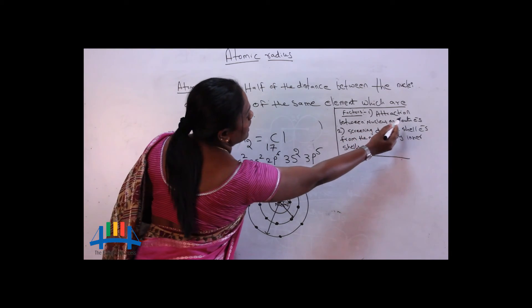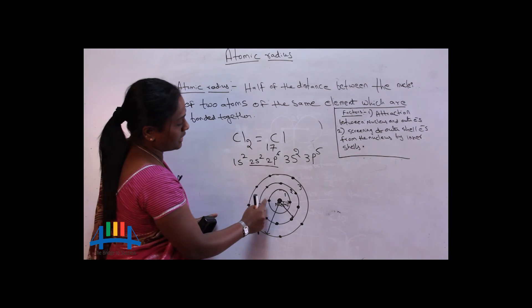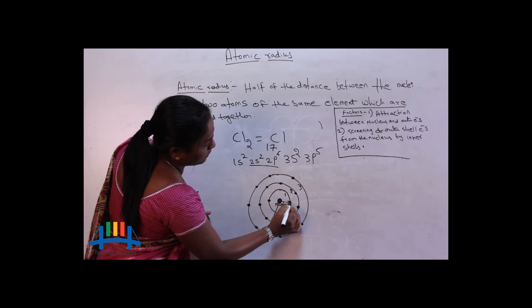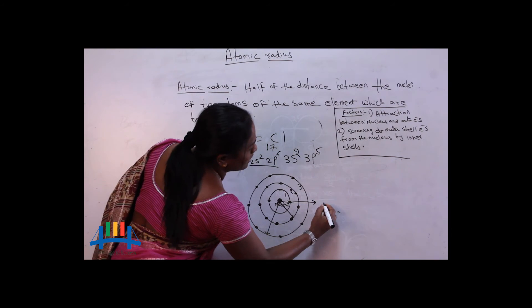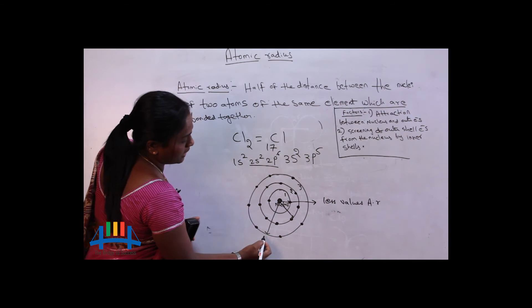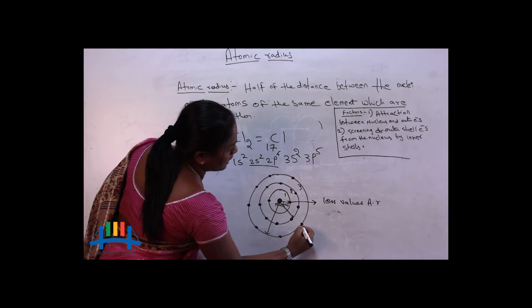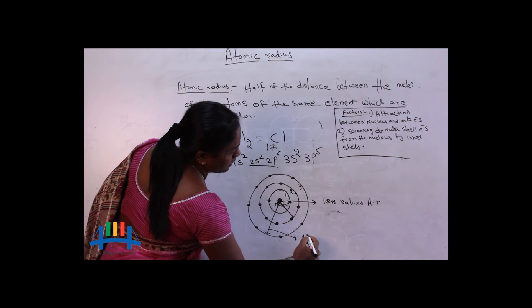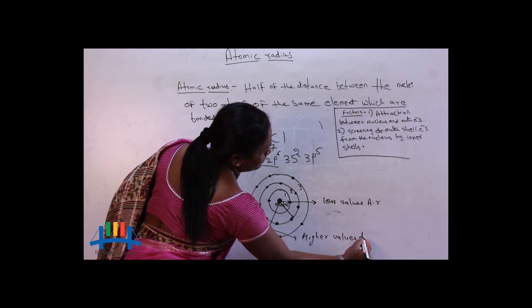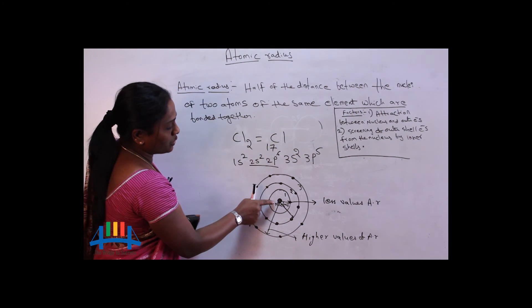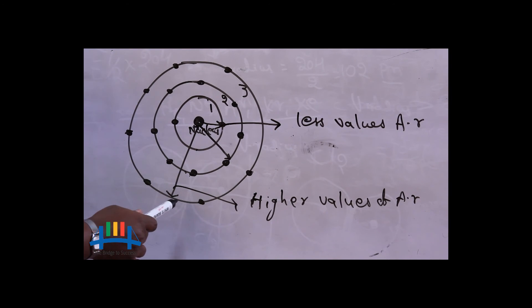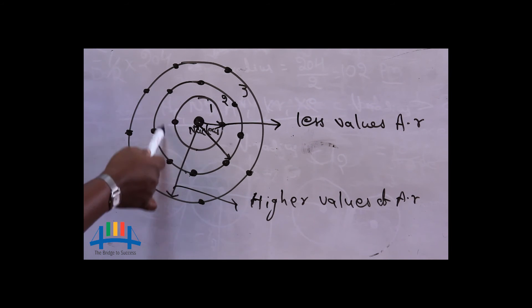That is why the attraction between the nucleus and the outermost electron is the main factor affecting atomic radius values. Electrons in the first shell give a smaller atomic radius value, while electrons in the third shell give a higher atomic radius value, due to weaker nuclear pull or nuclear attraction on the outermost shell.